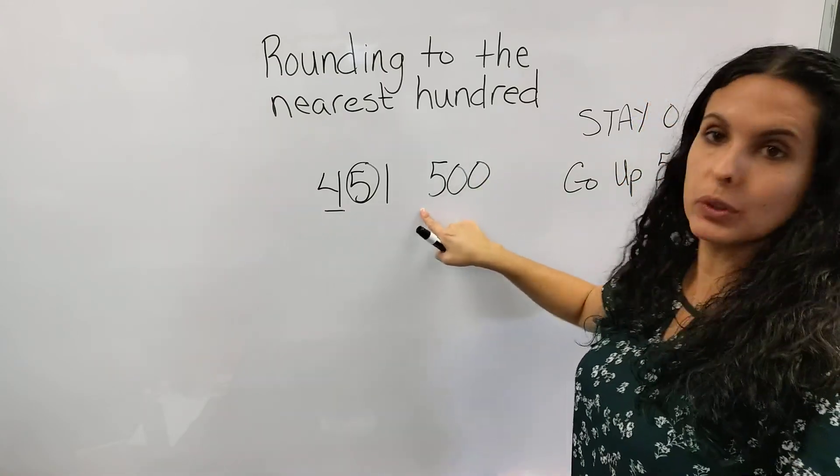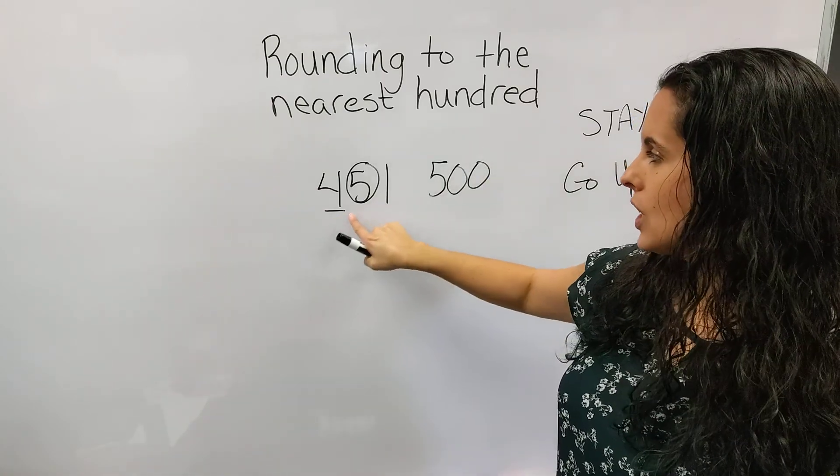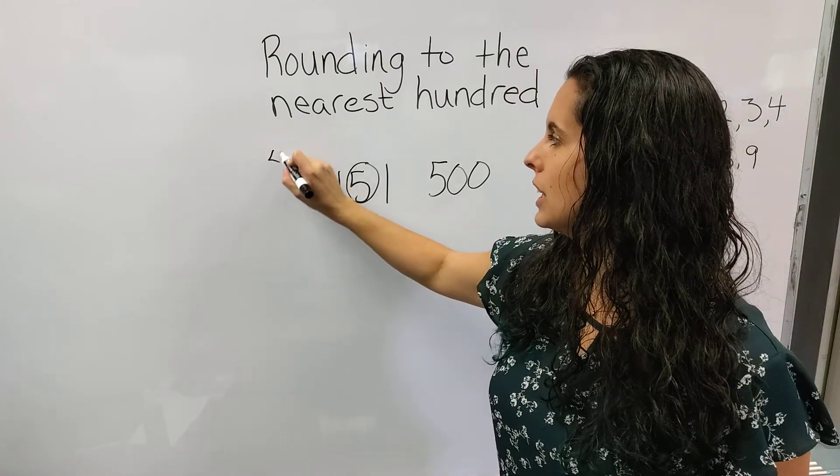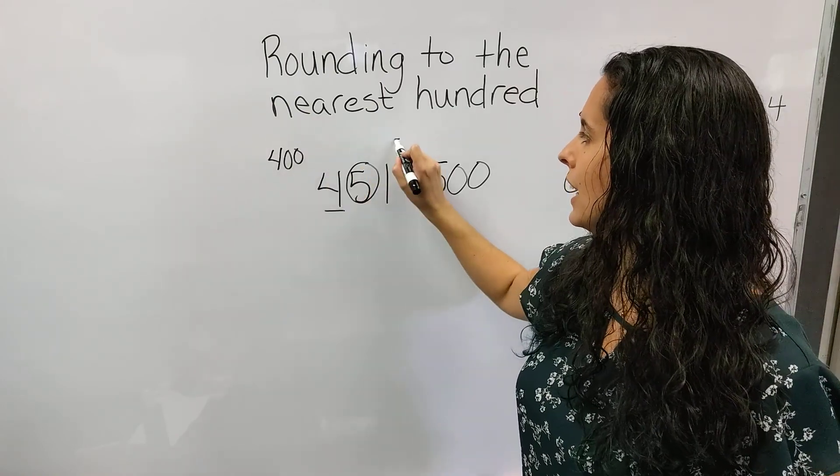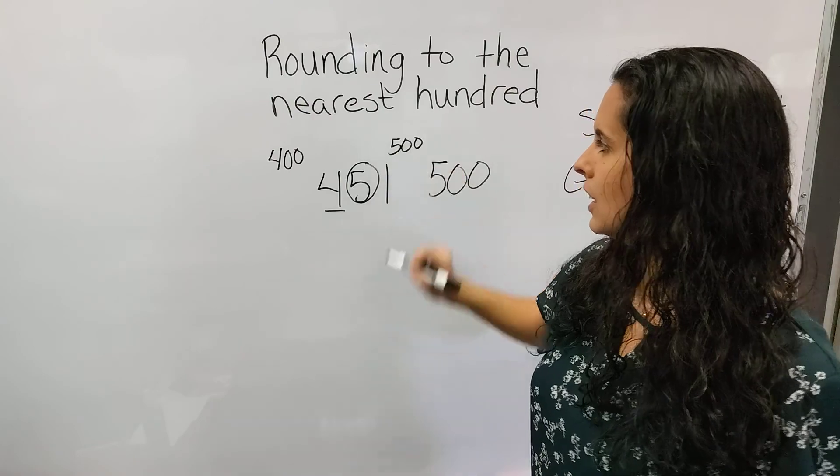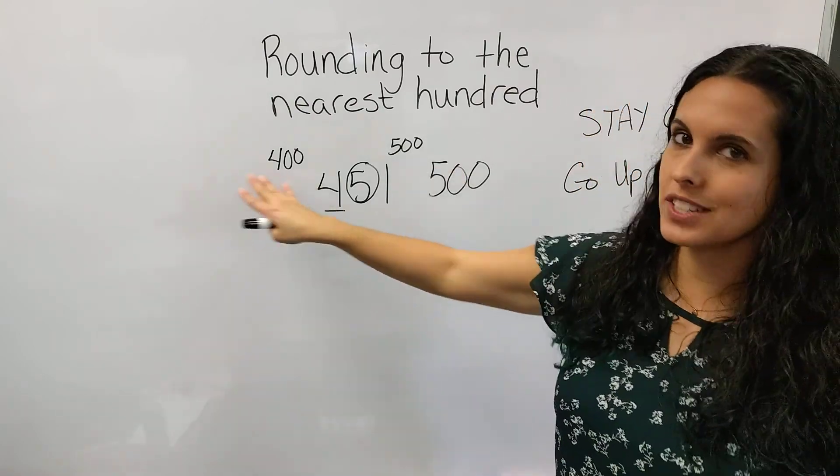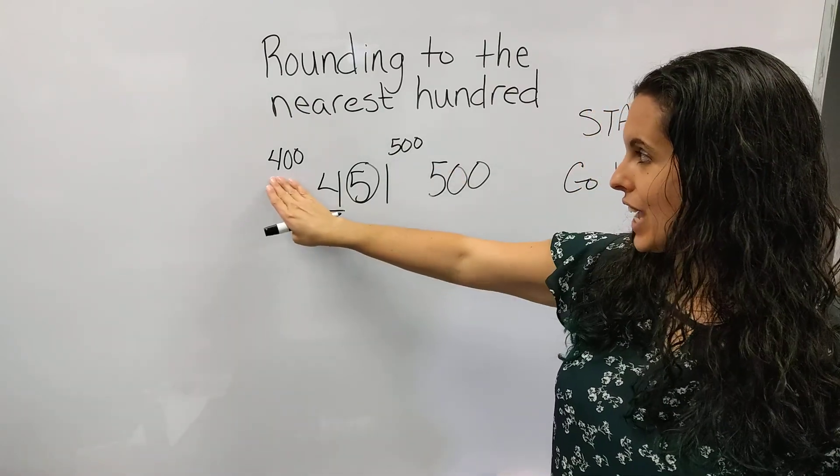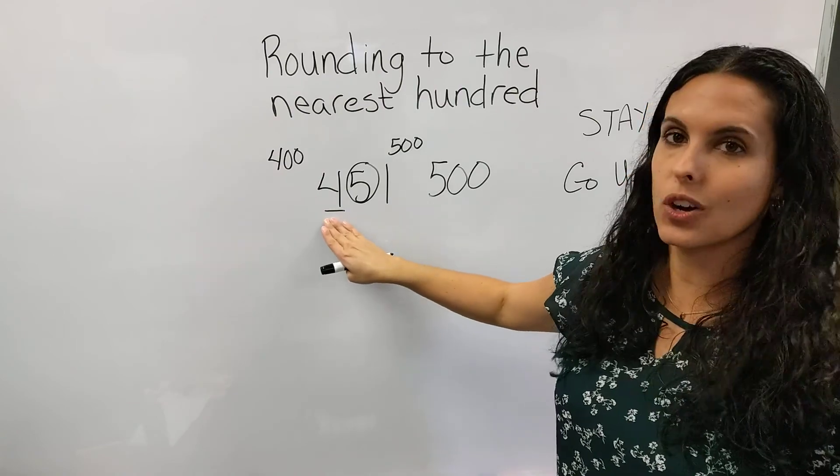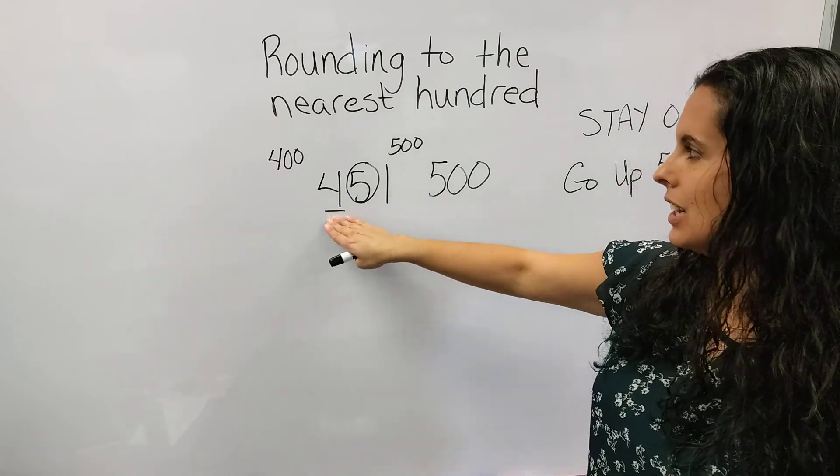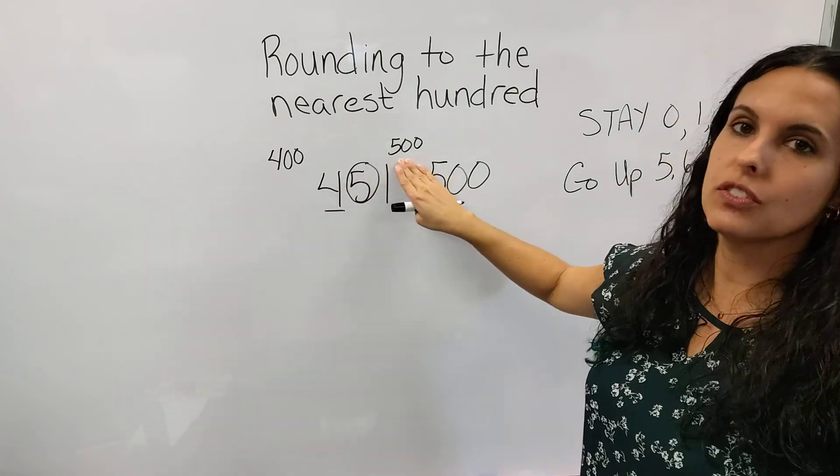On a number line, 451 would be between 400 and 500. Now remember, I don't say go down. I say we either stay at 400, because it's already the value of 400, or we go up to 500.